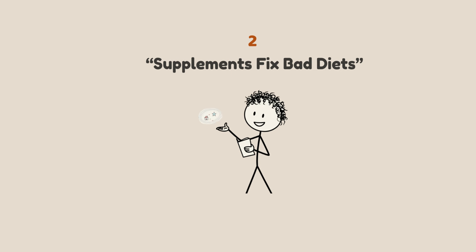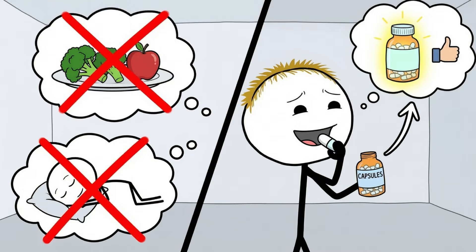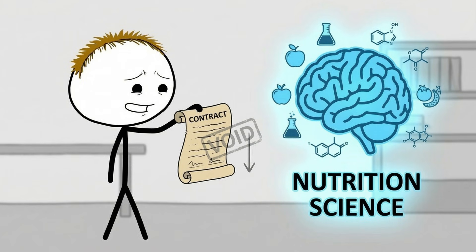Number two, supplements fix bad diets. There's a quiet deal many people make with themselves: eat poorly now, fix it later with pills. Missed vegetables? Capsule. Too much sugar? Antioxidant. Late night greasy food, no sleep? Multivitamin to the rescue. Nutrition science says that deal was never signed.